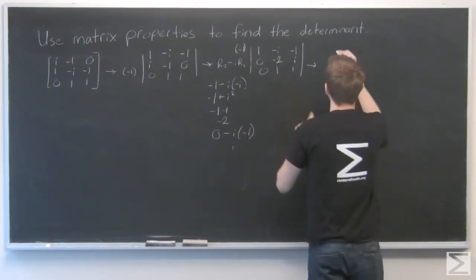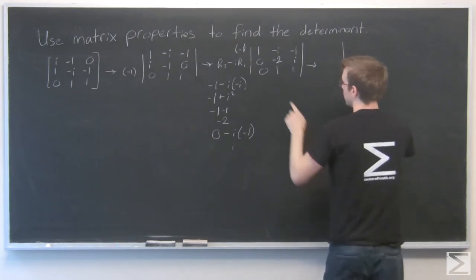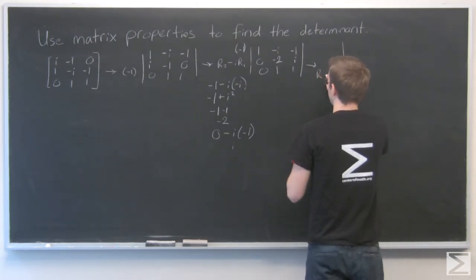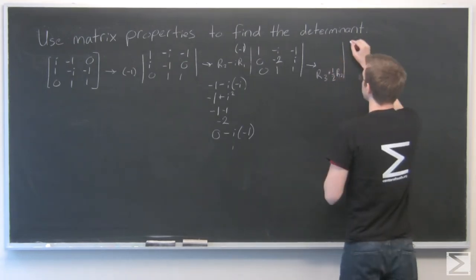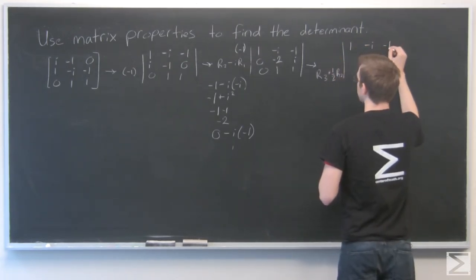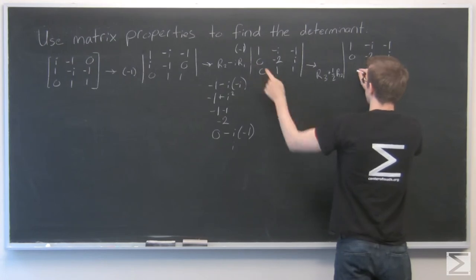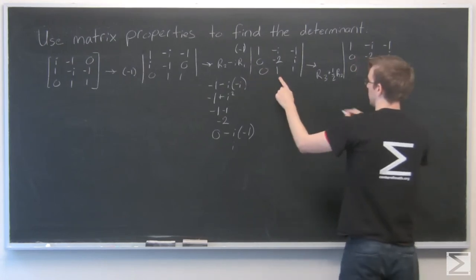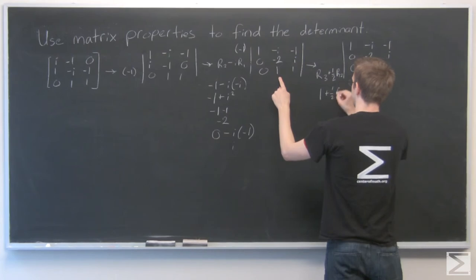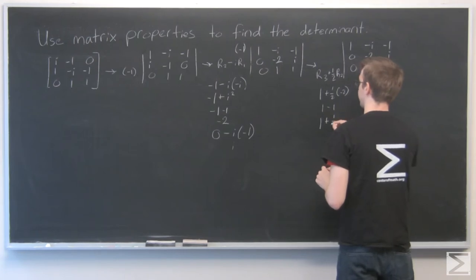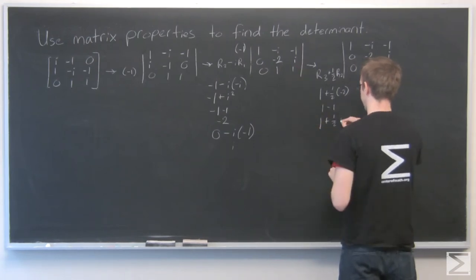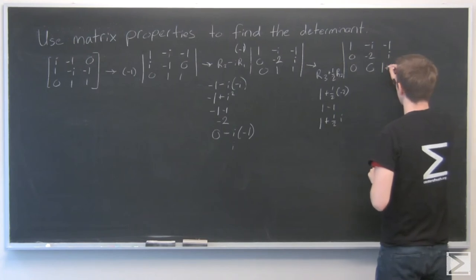Next up, I want to get rid of that. So I'm going to do that. I'll take row 3 and add 1 half times row 2. 0 and 0, that makes 0. 1 plus 1 half times negative 2 is 1 minus 1, so that's 0. And 1 plus 1 half times i, that makes 1 plus i over 2.